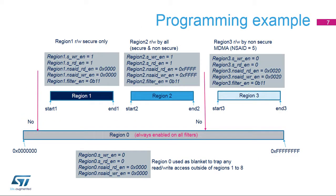This slide shows a simple programming example. The DDR space supports three non-overlapping regions. Region 1 is defined between Start 1 and End 1 addresses and is read and write accessible only by secure applications. Region 2 is defined between Start 2 and End 2 addresses and is a shared region, read and write accessible by secure and non-secure applications. Region 3 is defined between Start 3 and End 3 addresses and is read and write accessible only by the non-secure MDMA engine, with NSAID equals 5.